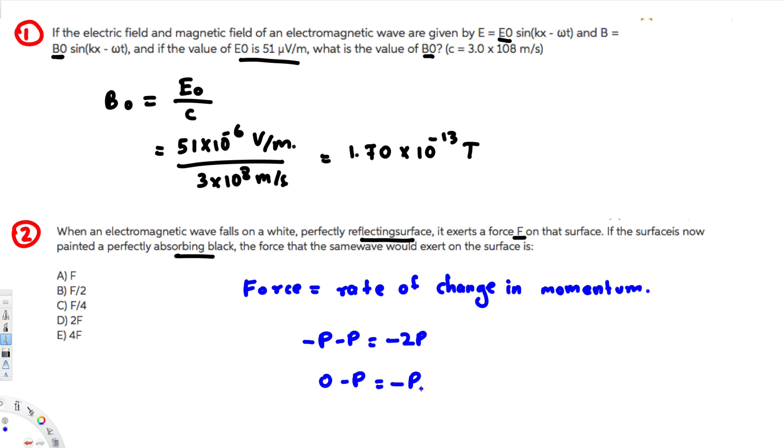We know that this is directly proportional to change in momentum. When we have reflecting surface, we had F. So when we have black color, we're only going to have half of this value. F is going to be F by 2. So in the new situation, we're going to have the F value that is F by 2. So that's going to be the answer for this question.